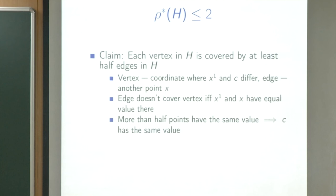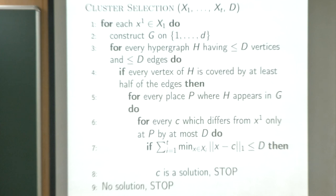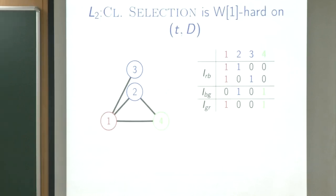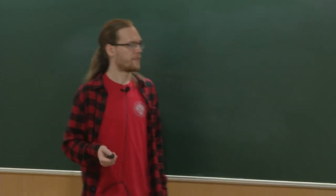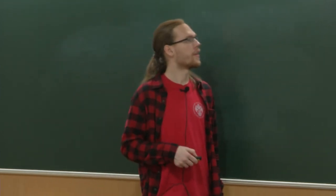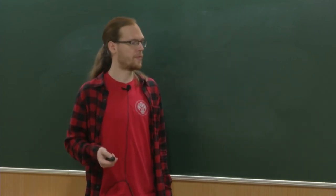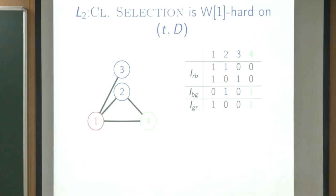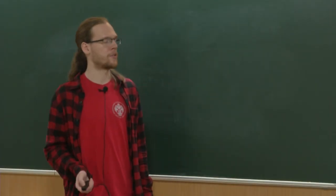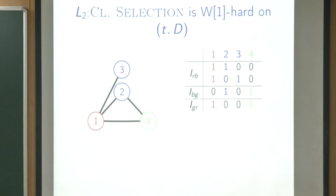So this property transforms into the fractional cover bound, and then we can use all of this machinery. The funny result is: for L1 and all Lp norms where p ≤ 1, this algorithm works and is FPT parameterized by D capital. But for the L2 norm, the cluster-selection sub-problem is W[1]-hard for D capital and even for t. This shows the same approach cannot really work for L2.